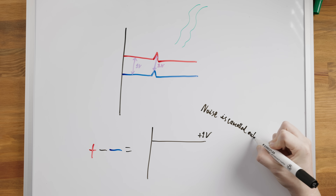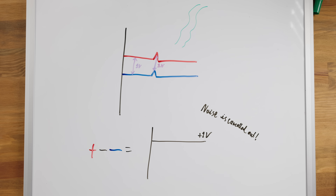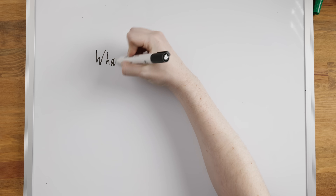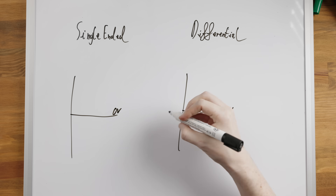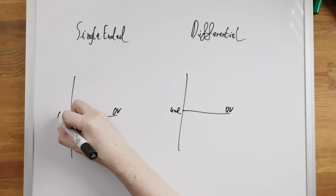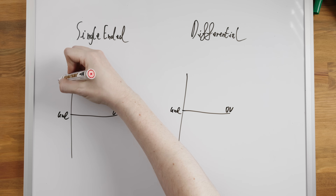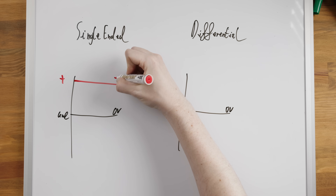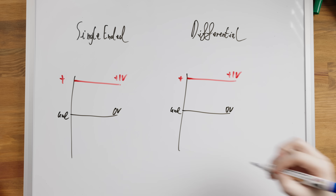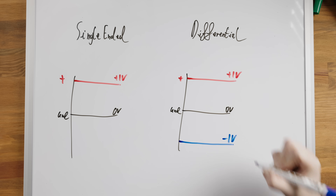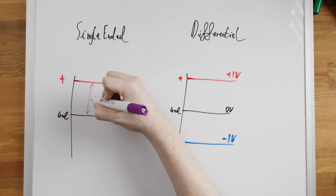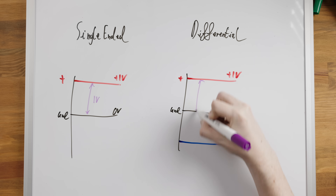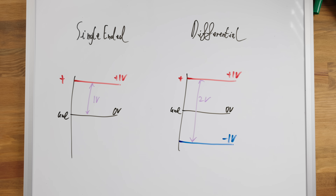Balanced systems give you a huge level of passive noise rejection, but most balanced systems in audio are also differential — meaning rather than one active signal conductor, the negative conductor is also carrying an equal but opposite version of the positive. The difference between these at any given point is twice as much as if it were just the positive signal referenced to ground in a single-ended system.